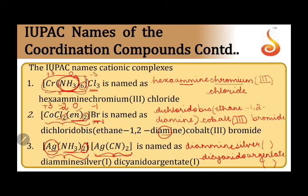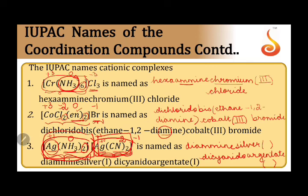Taking silver's oxidation number as plus one in the first sphere — ammonia is zero — the overall charge is plus one. In the second sphere, silver's oxidation number is again plus one, cyanide is minus one, and there are two cyanides giving minus two charge, so the overall charge is minus one. The two spheres balance each other out, and both silver atoms exhibit an oxidation number of one.